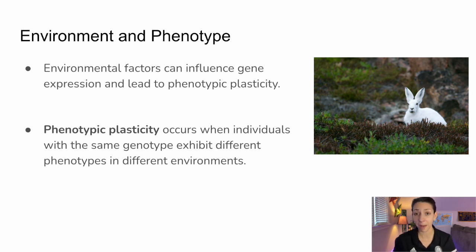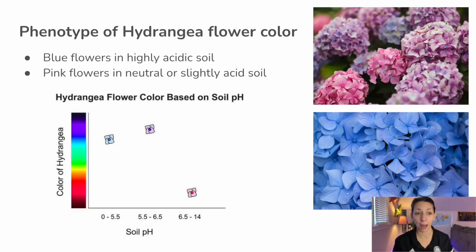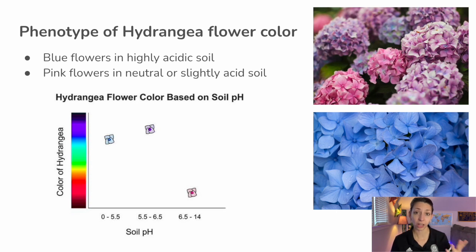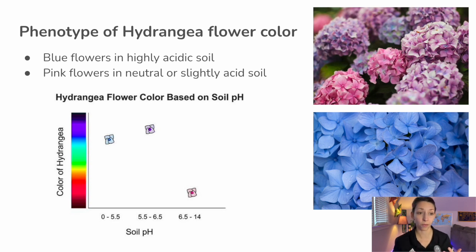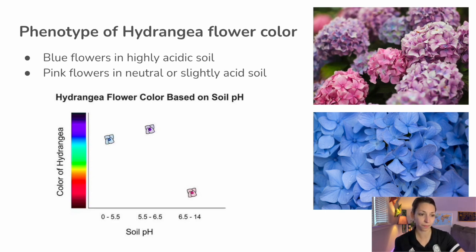For example, some mammals like rabbits can exhibit different fur colors at different temperatures. Hydrangeas are another popular example of this. The petals of certain hydrangeas can change color depending on the pH of the soil they're planted in. Blue flowers appear when the soil is highly acidic, and pink flowers appear when there's a neutral or slightly acidic soil.